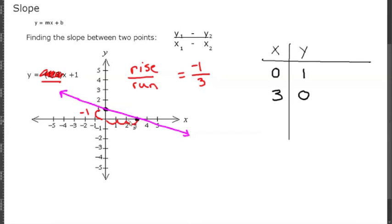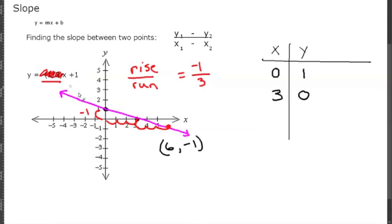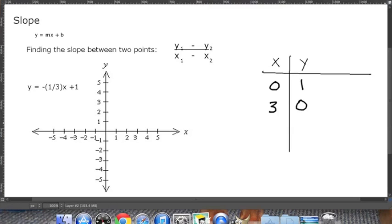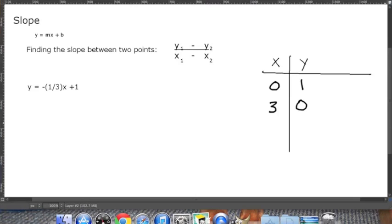We can extend this pattern to find another point: move down 1 and over 3, giving us the point (6, -1). Let's verify by plugging 6 into the equation: negative 1/3 times 6 is negative 2, and negative 2 plus 1 is negative 1 — our y value. This checks out.